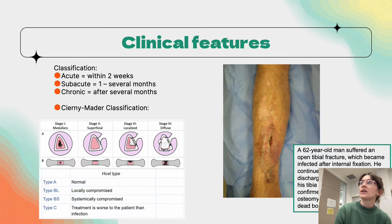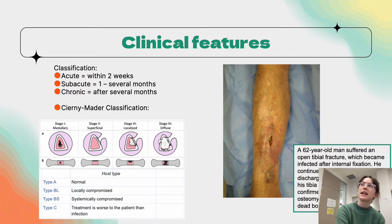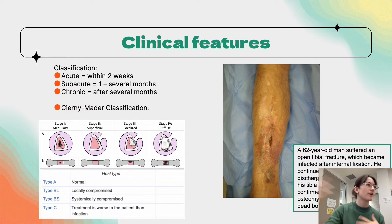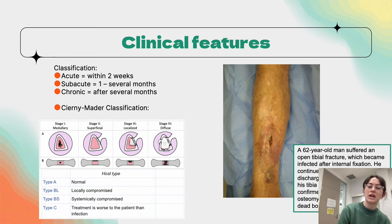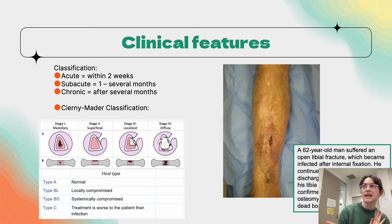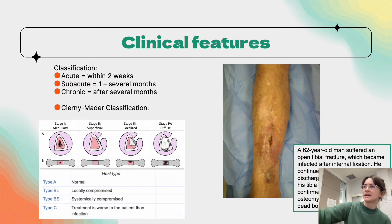Moving on to clinical features. We classify osteomyelitis as acute — within two weeks — subacute — one to several months — and chronic, after several months. We also have a classification system describing anatomic involvement, host treatment, and prognosis of the disease, which depends on where the infection is in the bone and the host type.